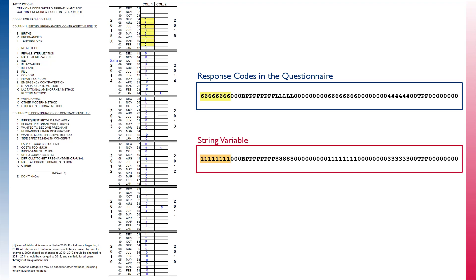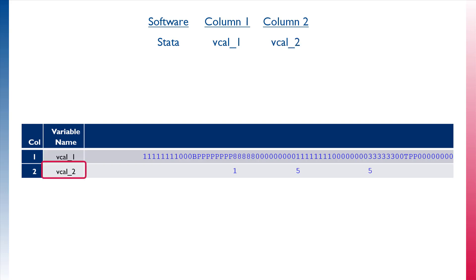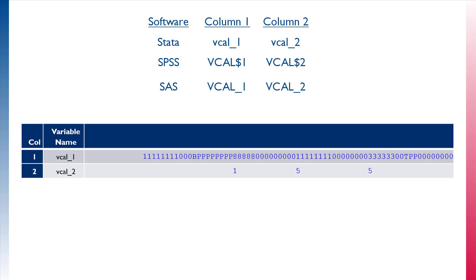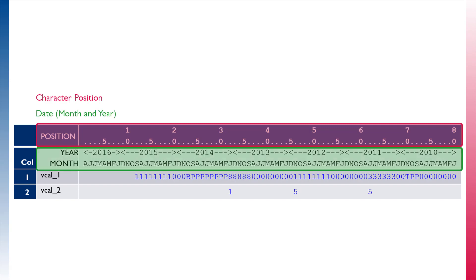Here are the two columns as string variables. If you're using Stata, the variable name for column 1 is vcal_1 and column 2 is vcal_2, though it's important to know that these variable names are different depending on which statistical software you are using to manipulate the data.